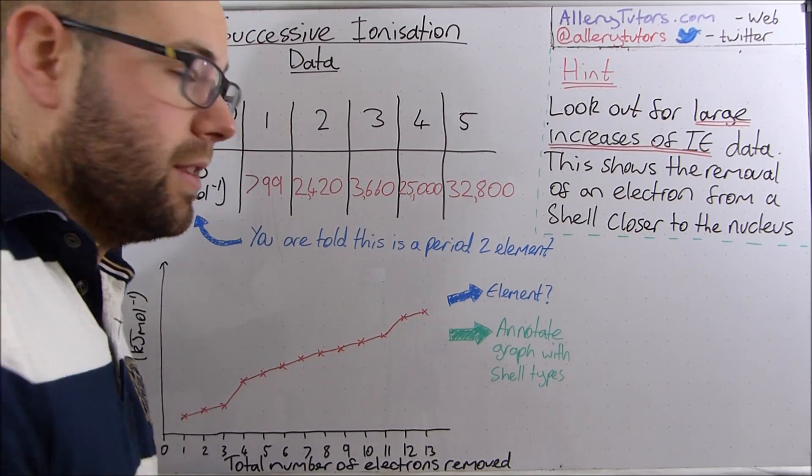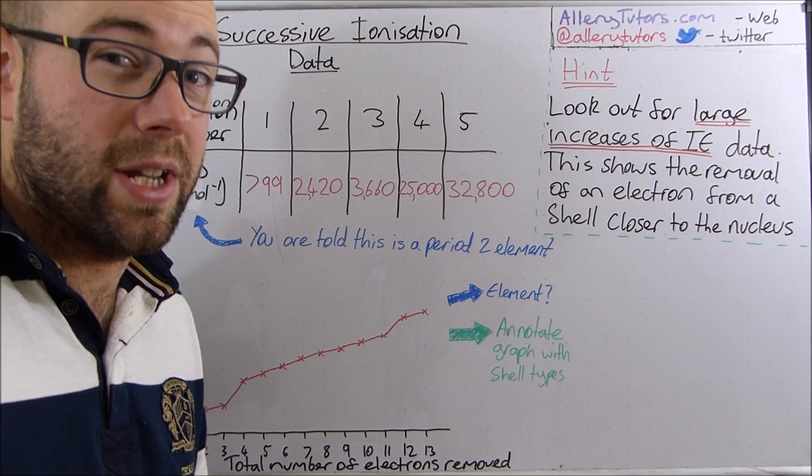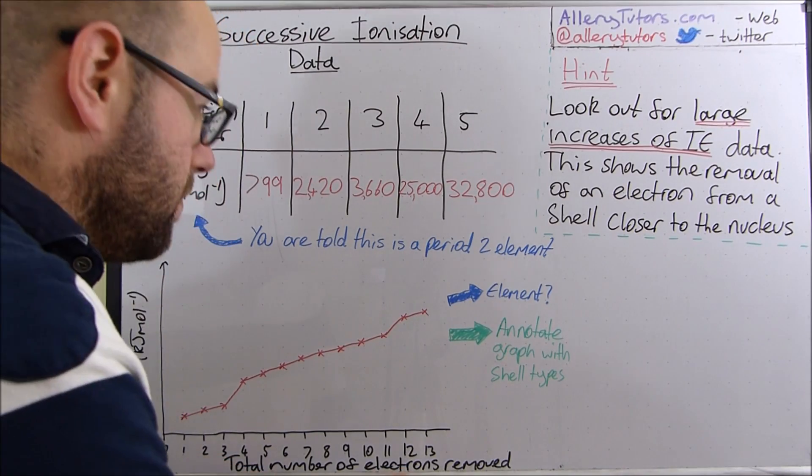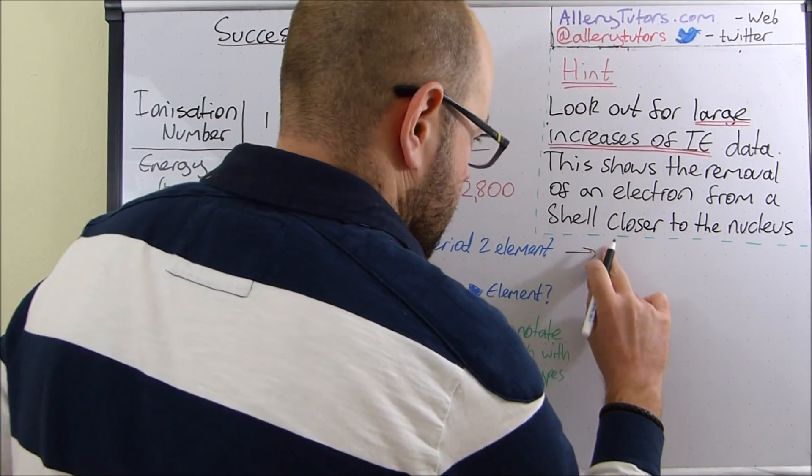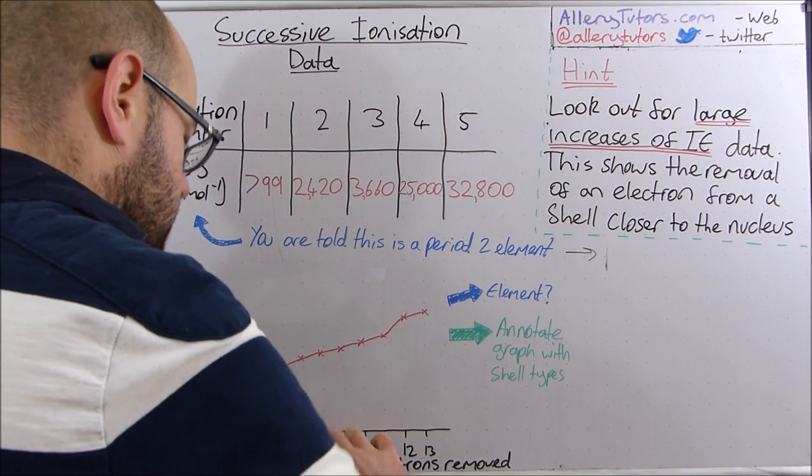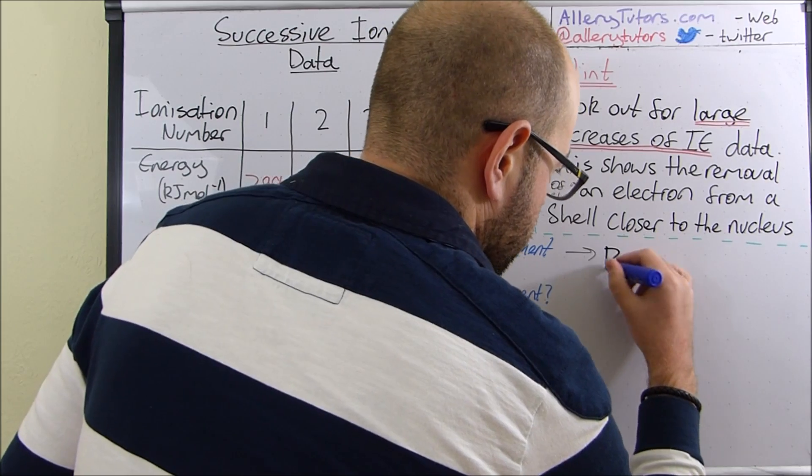This is saying that the amount of energy required to remove those electrons is pretty straightforward, so that's the answer, which is boron. I'm just going to put that there with a pen so you can see it, this one is boron.